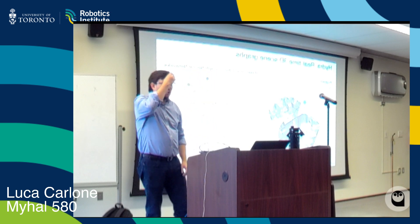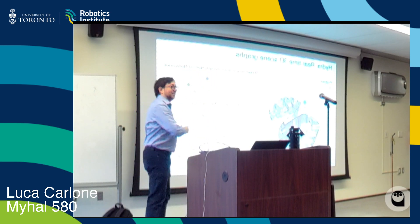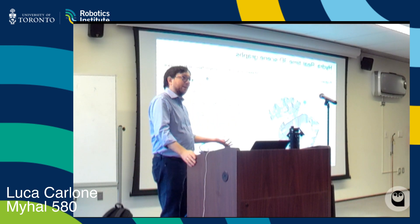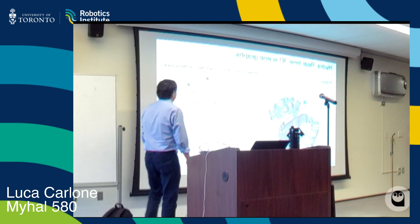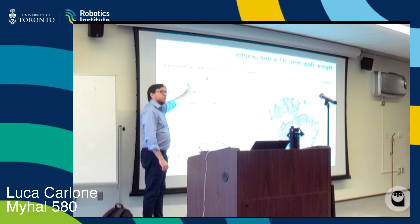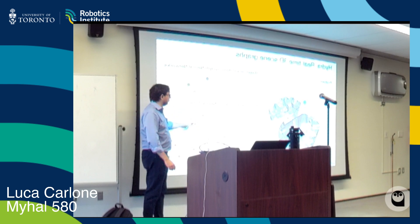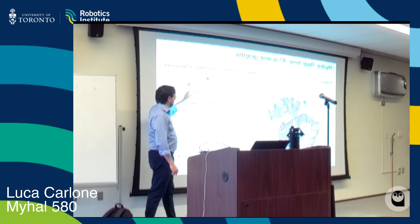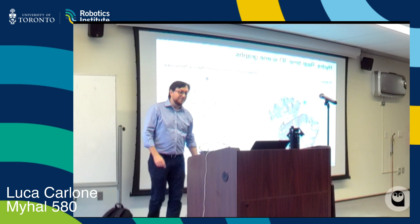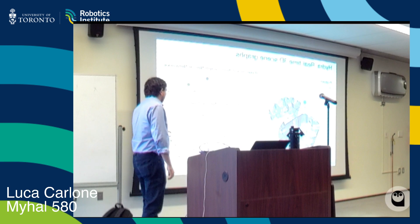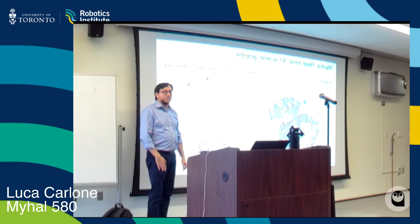We propose an alternative to standard graph neural networks called the neural tree. Instead of doing message passing on the graph, you transform the graph into a tree using tree decomposition, and then do message passing on the tree. By doing this very simple trick, we get much better theoretical and practical performance.